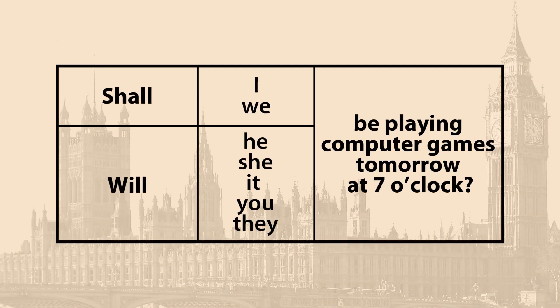Обратите внимание, что в современном английском shall практически не употребляется. Вопросительные высказывания строятся так же, как и во Future Simple — а именно вынесением will на первое место в предложении. Остальная часть предложения останется без изменений. Например: Will I be playing computer games tomorrow at seven o'clock? Will you be playing computer games tomorrow at seven o'clock? Will he be playing computer games tomorrow at seven o'clock? Также возможно употребление shall.